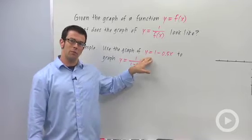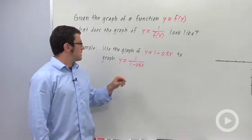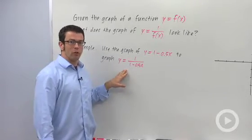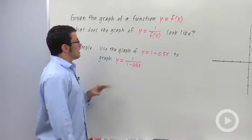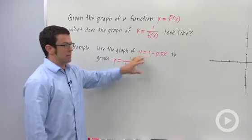Let's use the graph of y equals 1 minus a half x to graph y equals 1 over 1 minus a half x. First thing I want to do is graph y equals 1 minus a half x.